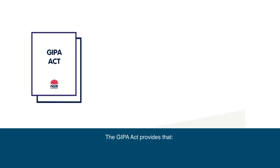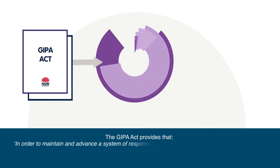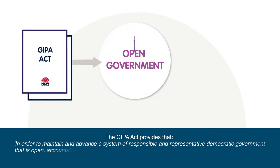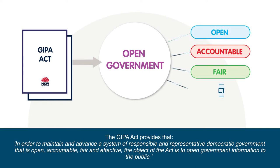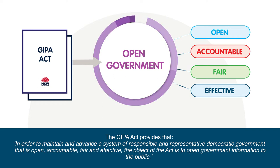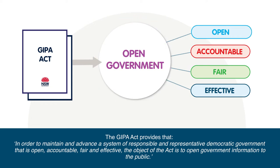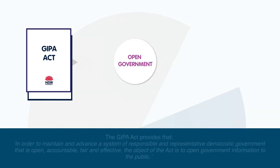The GIPA Act provides that, in order to maintain and advance a system of responsible and representative democratic government that is open, accountable, fair and effective, the object of the Act is to open government information to the public.